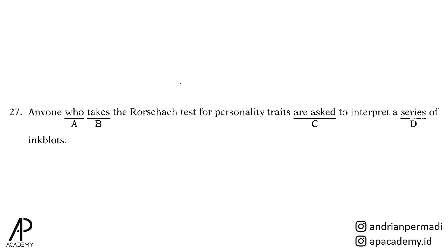Untuk nomor 27, kita lihat pilihan A. Who adalah conjunction atau connector. Penggunaan conjunction who aturannya perlu muncul setelah noun. Anyone adalah noun, oleh karena itu conjunction who sudah tepat. Selain itu, who merujuk pada noun yang merupakan manusia. Dalam pola adjective clause, who berfungsi sebagai conjunction sekaligus subject. Oleh karena itu, yang akan muncul setelah who adalah verb. Takes adalah verb.